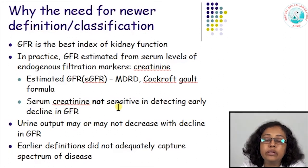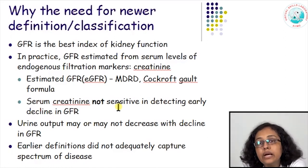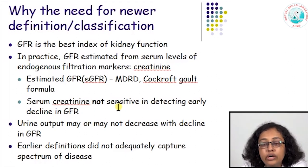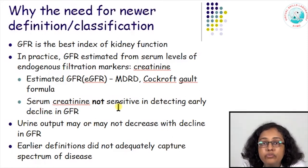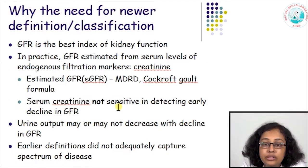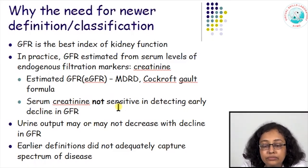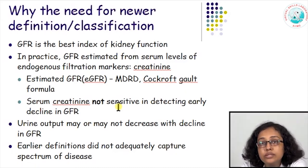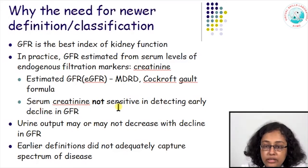Initially when the GFR declines, the creatinine may continue to remain normal, and by the time creatinine actually starts rising, the GFR decline may already be significant and the patient may already have had significant acute kidney injury that is not picked up by serum creatinine alone. Traditionally, urine output was also used to define acute renal failure, but sometimes when there is a decline in GFR the urine output may not decrease — what is known as non-oliguric acute renal failure. So the routine definition does not adequately capture the entire spectrum of the disease.